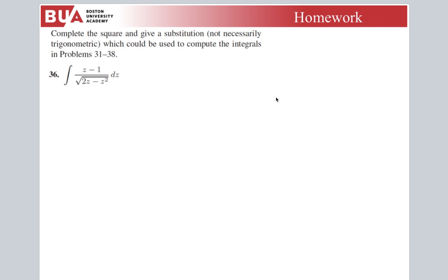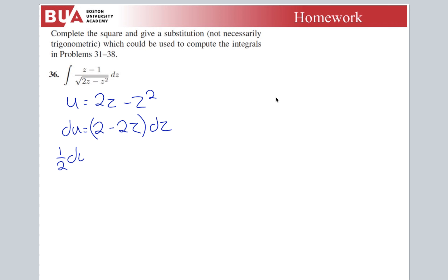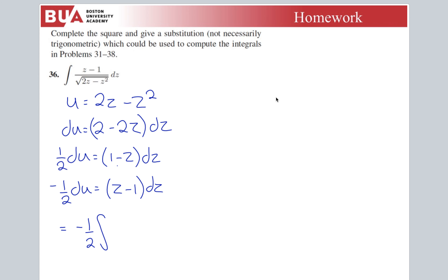Problem 36 looks similar to 35 but because I have z − 1 on top, I can use a u-substitution. Let u = 2z − z², then du = (2 − 2z) dz, so (1/2) du = (1 − z) dz. Factoring out a negative sign: −(1/2) du = (z − 1) dz. So the integral becomes −(1/2) ∫ (1/u) du. Simpler one here.